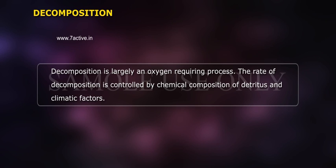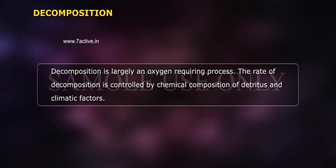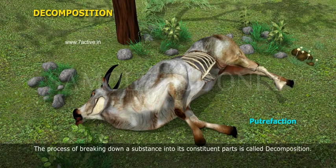Decomposition is largely an oxygen-requiring process. The rate of decomposition is controlled by the chemical composition of detritus and climatic factors. The process of breaking down a substance into its constituent parts is called decomposition.